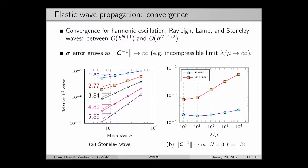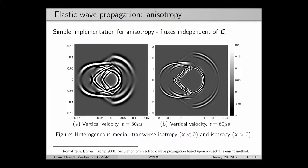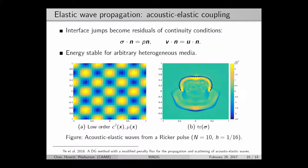A couple other nice features of our formulation for elasticity: we found we can incorporate anisotropy with no real change in our code at all. This is due to the fact that all our numerical fluxes in our DG method, the couplings between different elements, are completely independent of our physics, our constitutive stress tensor. So the difference between anisotropy and isotropy is just a change in this tensor, which only shows up when you apply this weight-adjusted mass matrix. Here's an example from Comatiche, Barnes, and Tromp, where they have a wave propagating through transverse isotropic media on the left and isotropic media on the right. Our results match very closely with those in the literature.